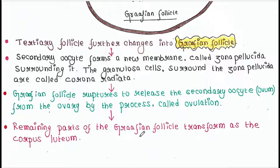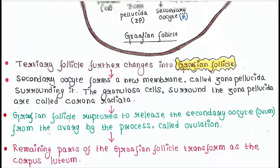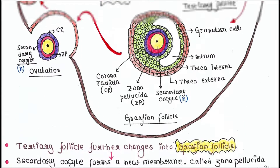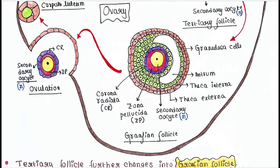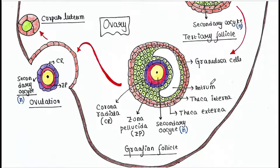The remaining parts of the Graafian follicle transform into the corpus luteum. When the Graafian follicle ruptures, the remaining cells form the corpus luteum. So this is the complete process of oogenesis.